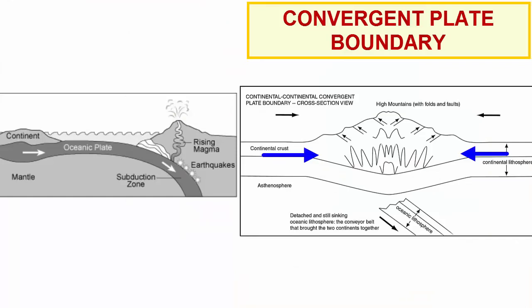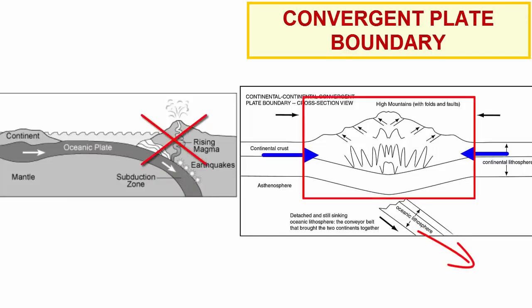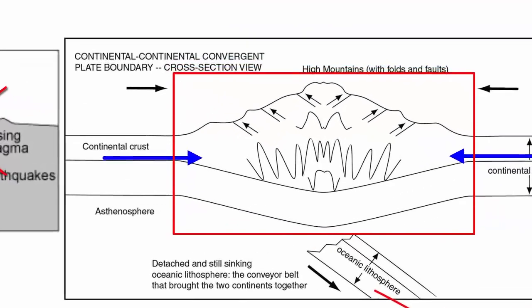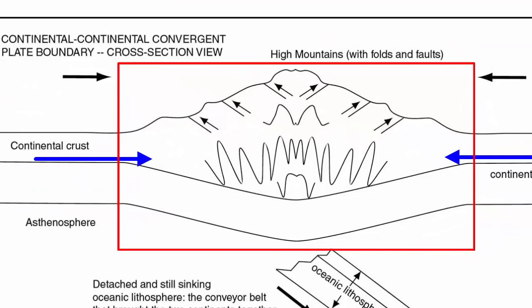When two continental plates collide, subduction brings them together but then the subducting plate completely detaches and sinks into the mantle. Volcanism stops, the trench disappears, and the largest mountains on the planet form as terrain accretion mashes the two continents into a folded, faulted mountain system that rises high above the surface with a deep isostatic root beneath.